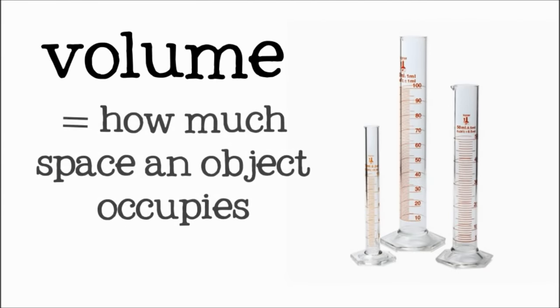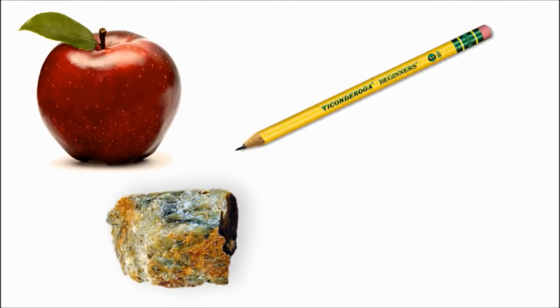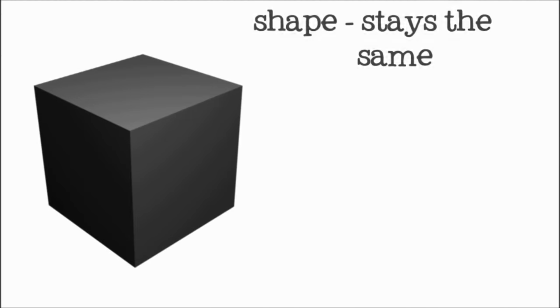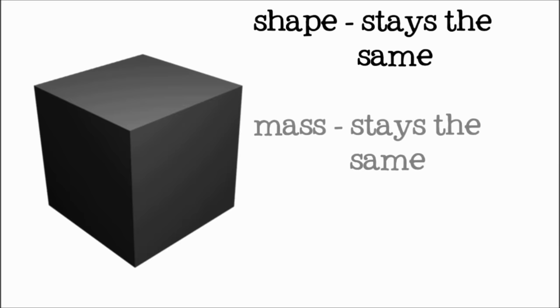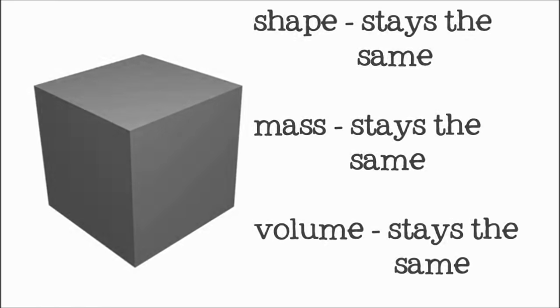Solids are easy to recognize. Rocks, apples, pencils, and plants are all examples of solid objects. A solid object has a definite shape that doesn't change when you move it or put it in a container. They also have a consistent mass and volume.